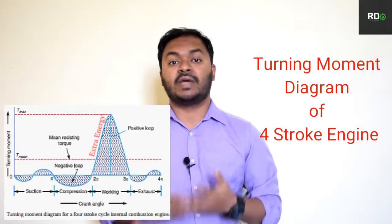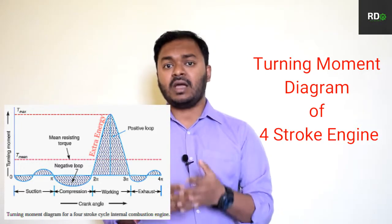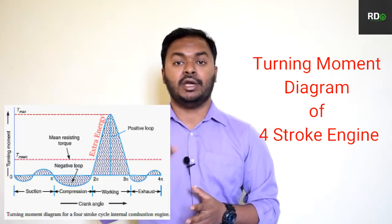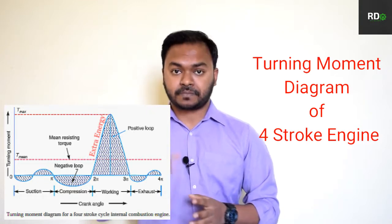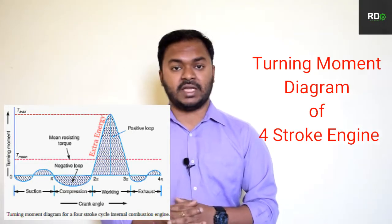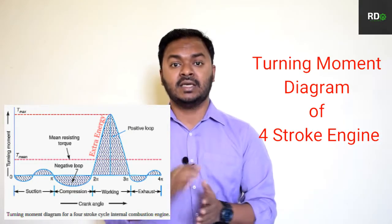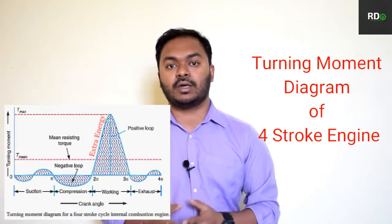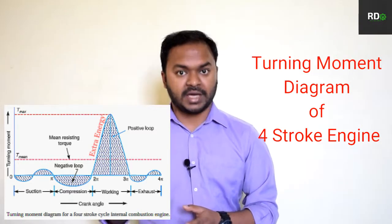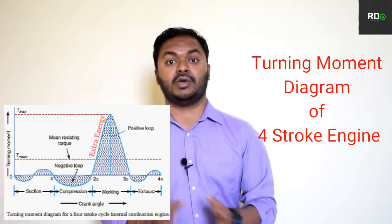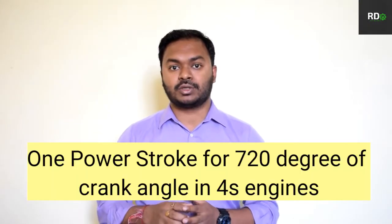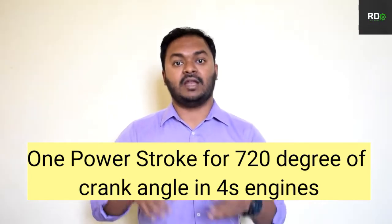This turning moment diagram, or T-theta diagram, represents the flywheel's work and how it manages the fluctuation of energy during one complete cycle of an engine. This is a four-stroke engine, so it is shown from zero degrees to 720 degrees, because each stroke equals 180 degrees — and 180 × 4 = 720 degrees. This 720 degrees of crank rotation gives you one power stroke.